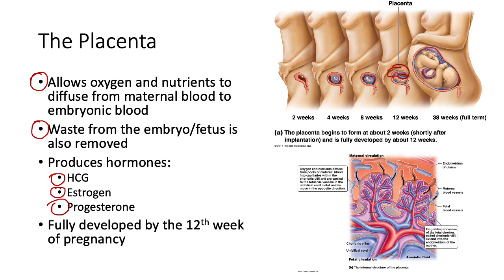There can be issues with the placenta. Depending on where the egg implants, the placenta can end up blocking the cervix — a condition called placenta previa. If that occurs, a woman would not be able to have a vaginal birth and would need a cesarean or c-section. In modern times this is not dangerous; it just means the baby arrives in a different way.